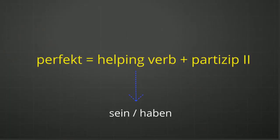Let us understand what is Perfekt. Perfekt is equivalent to present perfect tense in English. While writing a Perfekt sentence, we will need a helping verb which is Haben or Sein verb, and we will need the Partizip II form of the verb. The Partizip II form of the verb you have to learn as it is.